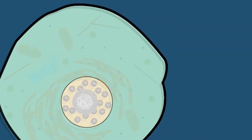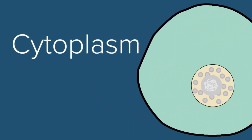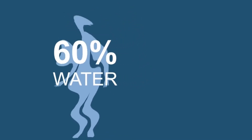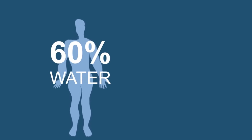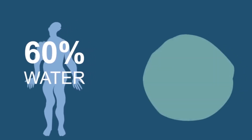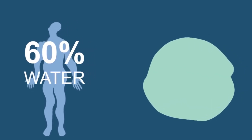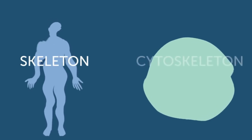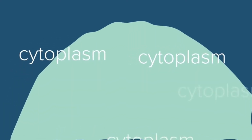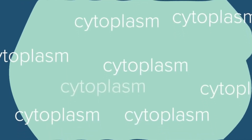The cytoplasm is the portion of the cell that contains everything between the outer plasma membrane and the nuclear envelope. All structures inside the cell are sitting in a jelly-like fluid called the cytosol, which is made mostly of water — which is why the human body is about 60% water. Because the cytoplasm is mostly water, it doesn't provide much structural support; instead, a structure called the cytoskeleton serves that purpose, similar to how bones support the human body.